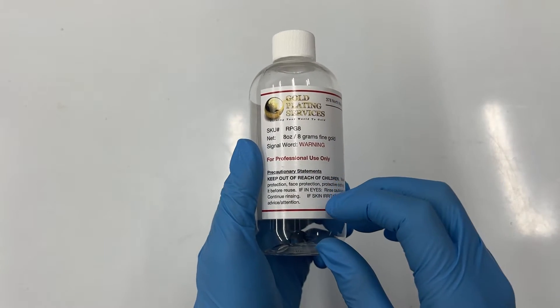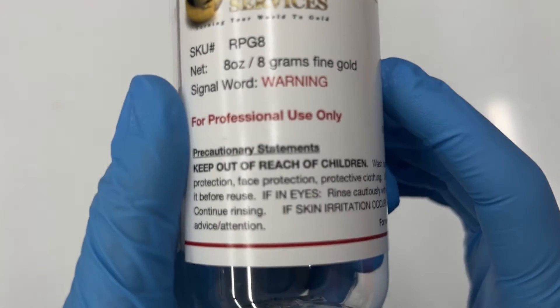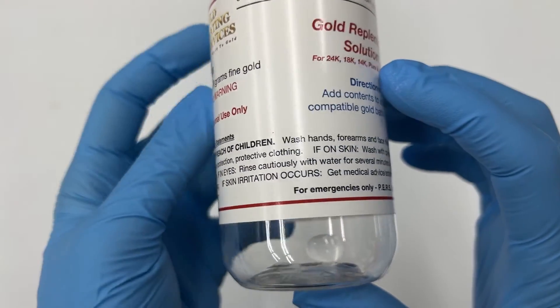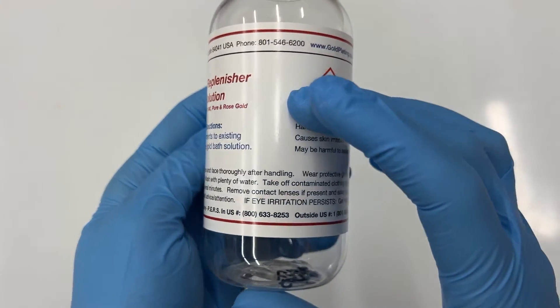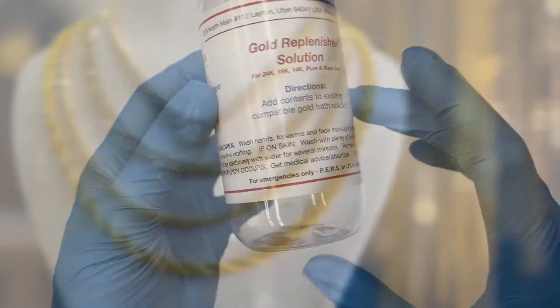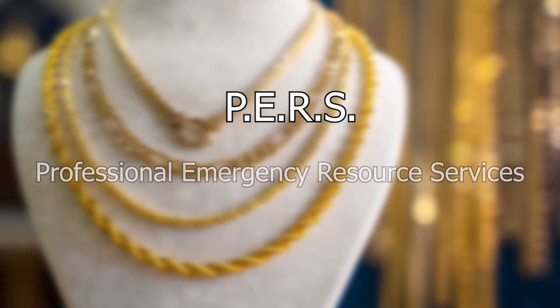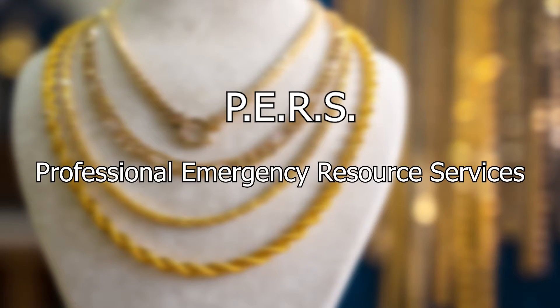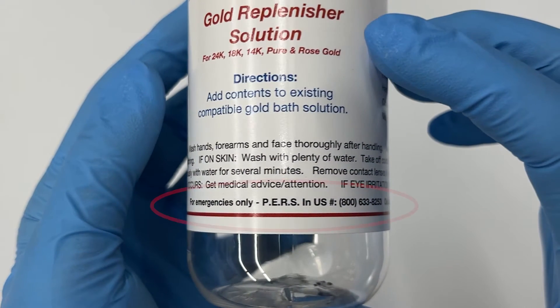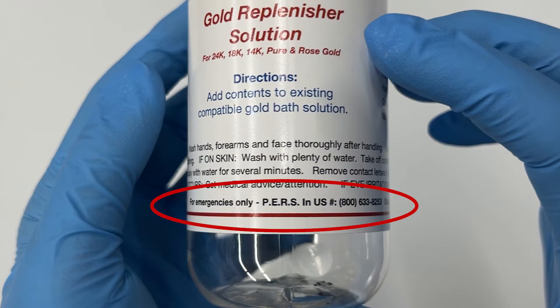Please be familiar with the precautionary statement that is found on each of our product labels. This information will tell you what to do if chemical exposure occurs. In case of emergency, seek medical attention and contact PERS, Professional Emergency Resource Services. Their contact information is listed on all the labels of our solutions.